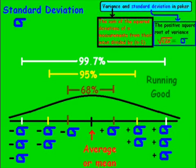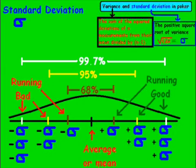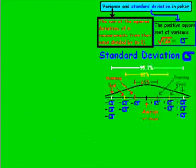In poker, the positive standard deviation is running good, and the negative standard deviation — one, two, and three — would be an example of running bad. We're going to go ahead and move this to the side and delve into an example of how we would calculate that in poker.